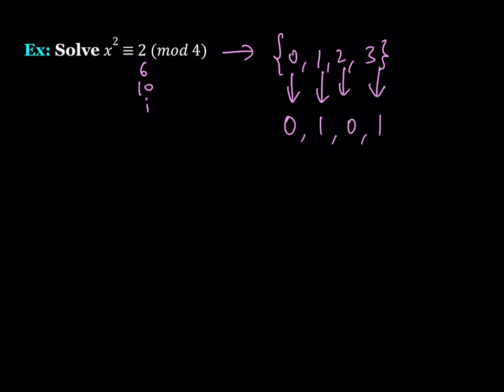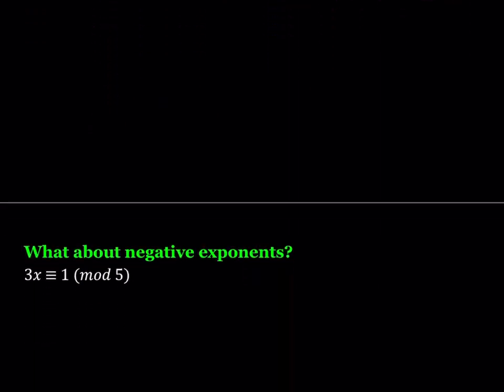So this is the set of x's and this is the set of x squares. What do you notice? If you square a number and look at it mod 4, it's never going to be congruent to 2 mod 4. So this equation has no solution because a perfect square can never be 2 mod 4. You can verify: any even number squared will never leave a remainder of 2 mod 4.